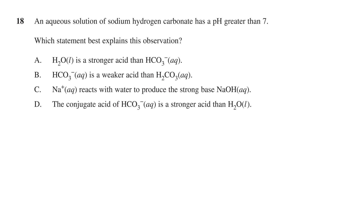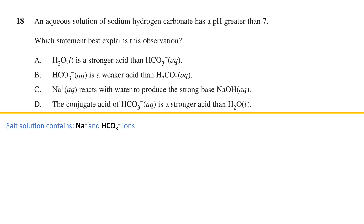The last question is question 18: an aqueous solution of sodium hydrogen carbonate has a pH greater than 7 — which statement best explains this observation? The solution contains sodium ions and hydrogen carbonate ions. Considering the sodium ion: if it formed sodium hydroxide as implied by option C, that would be a very strong base and would dissociate again immediately, having no effect on the pH. Therefore, we can eliminate option C.